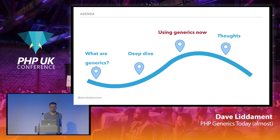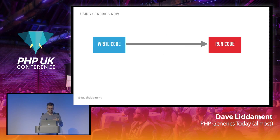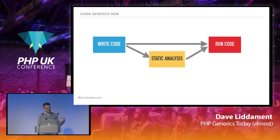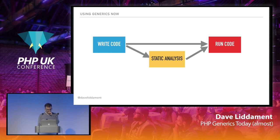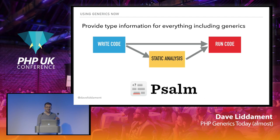If I lost you in the deep dive, we're now going to talk about how we're actually using generics now. It's not possible at a language level. So typically what we do is write code and run it, but we need an extra step somewhere in our process to do static analysis — certainly as part of CI, and maybe before you even commit your code.